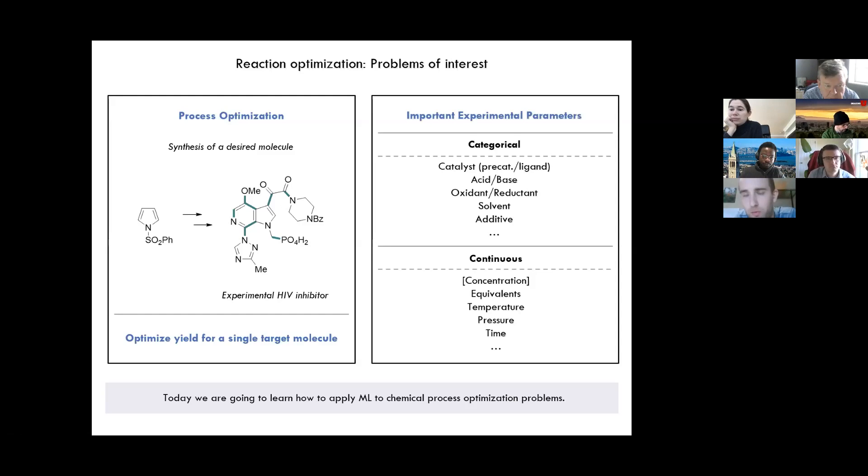These are really challenging problems because typically chemical reactions have a lot of different specific tuning parameters that you have to adjust to yield desirable or optimal conditions for reaction. These include both continuous and categorical variables. So categorical variables are things like catalysts. And of course, this subsets into precatalyst and ligand if you're doing a metal-catalyzed reaction, acid-bases, oxidant-reductants, solvents, additives. So there's a lot of different categorical parameters which sort of encompass the kinds of compounds that you might add into reaction in their different categories. Continuous parameters include pretty typical things like concentration, equivalence of reagents, temperature, pressure, time. So there's a lot of potential parameters that need to be optimized for reaction.